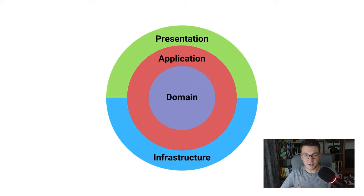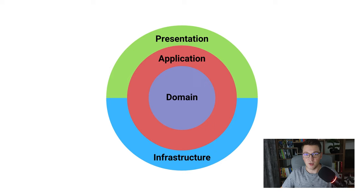On the outsides of the clean architecture we have two layers that are seemingly on the same importance. In the infrastructure layer you will see anything that is related to external systems. We define things like database access, message queues such as RabbitMQ or Kafka, email and notification services, storage services and so on. The infrastructure layer is responsible for hiding the implementation details for any external systems that we need to integrate with.